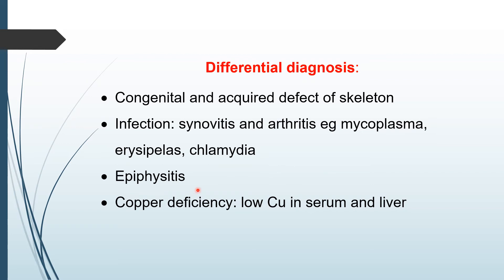Inflammation of the epiphyseal region can also be treated very well within a few days or a week. Another disease that produces almost similar symptoms to rickets is copper deficiency — most of the symptoms are nearly the same. But in copper deficiency, we can estimate the copper level in serum and liver; it will be low. This is also temporary and can be corrected by giving copper supplementation.